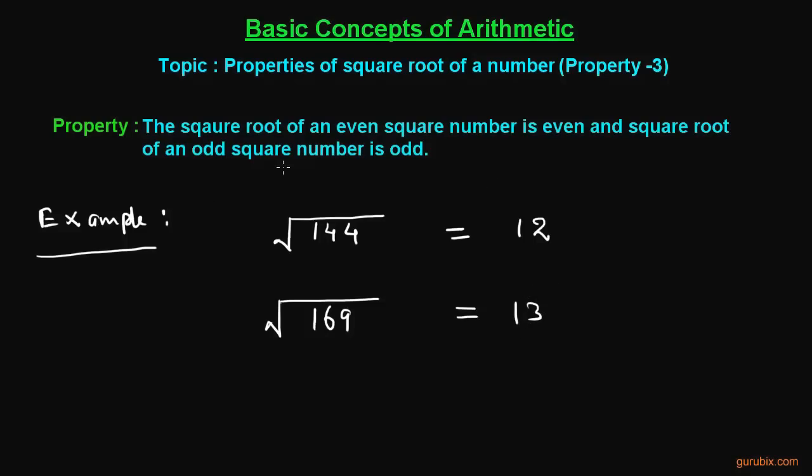So the square root of an odd square number is odd. Hence, this proves the property. Thank you.